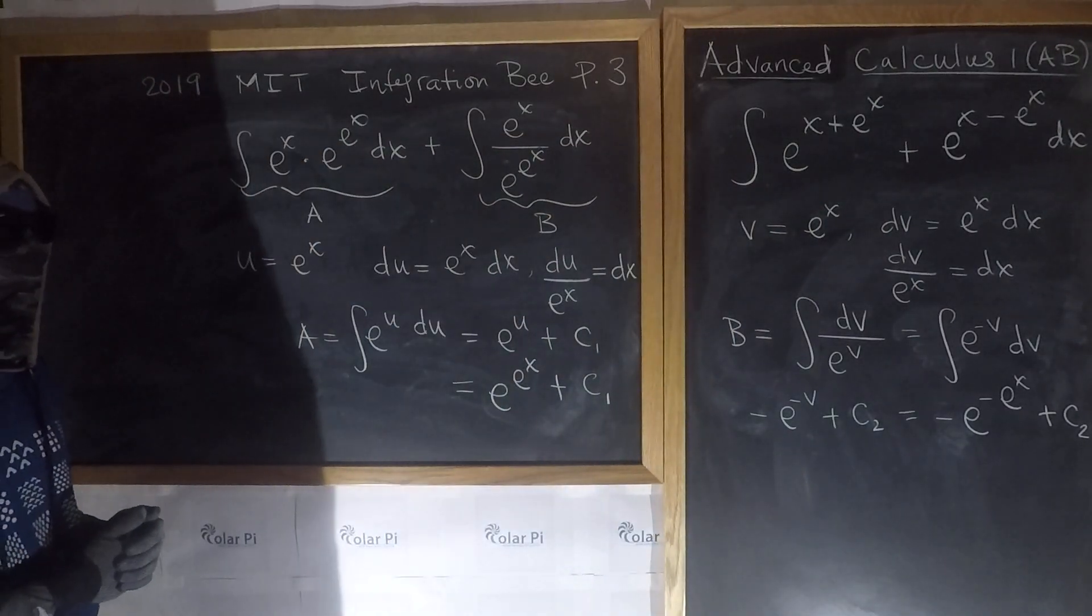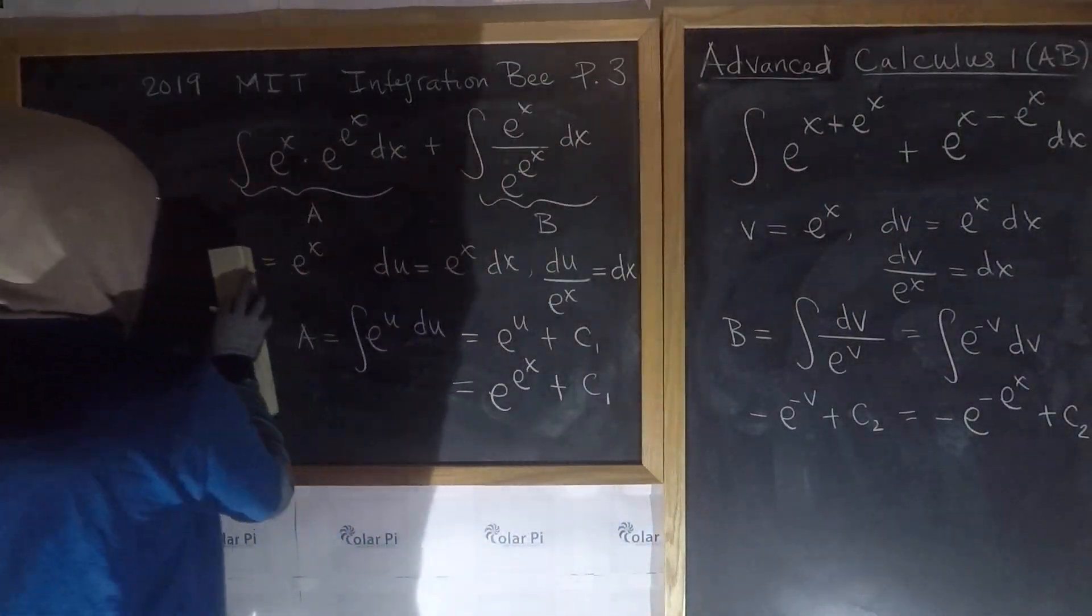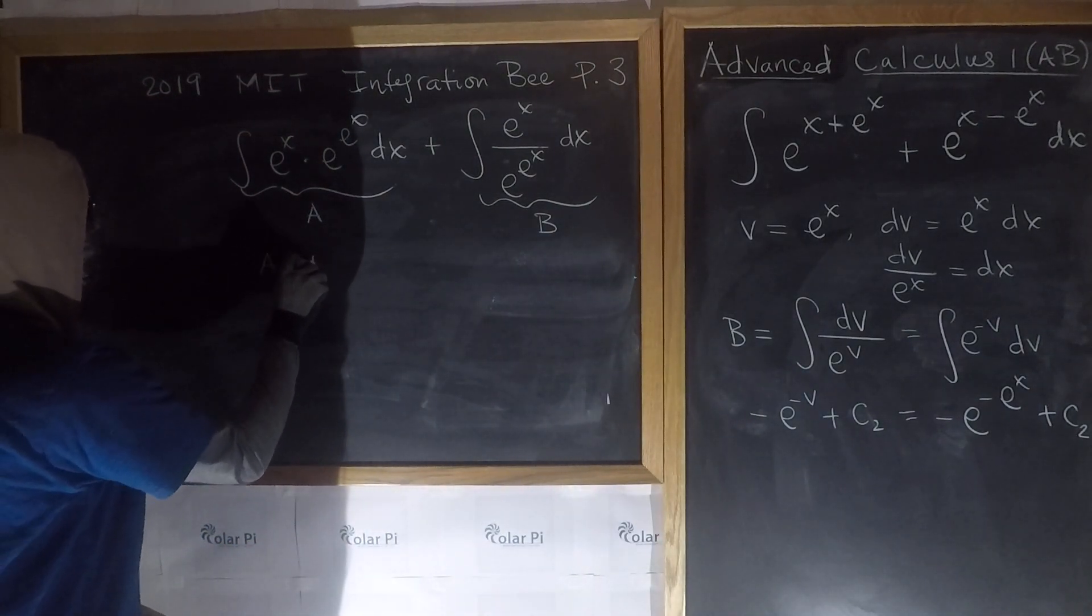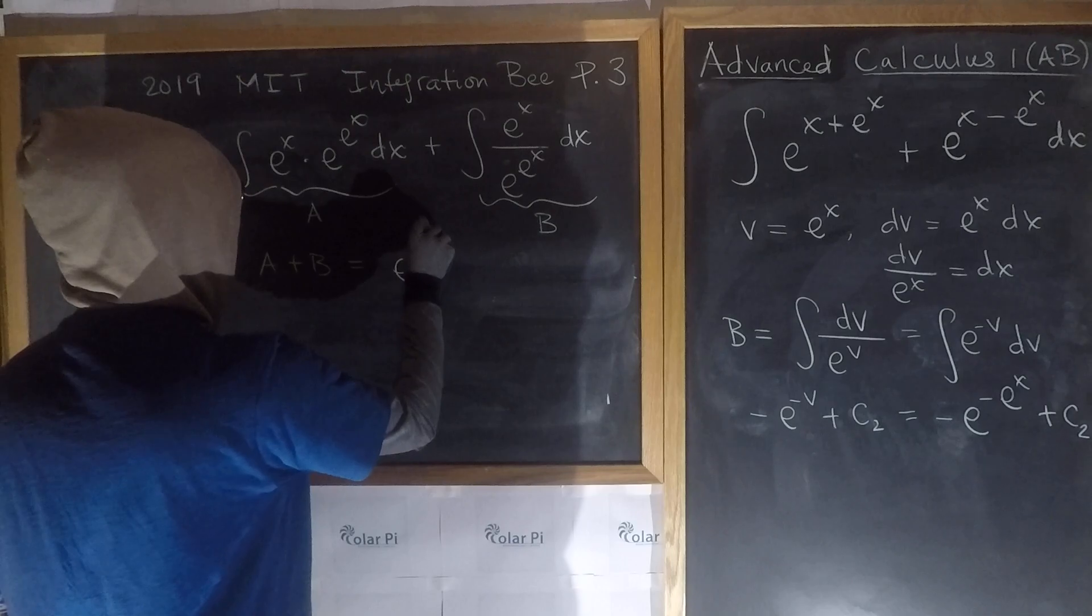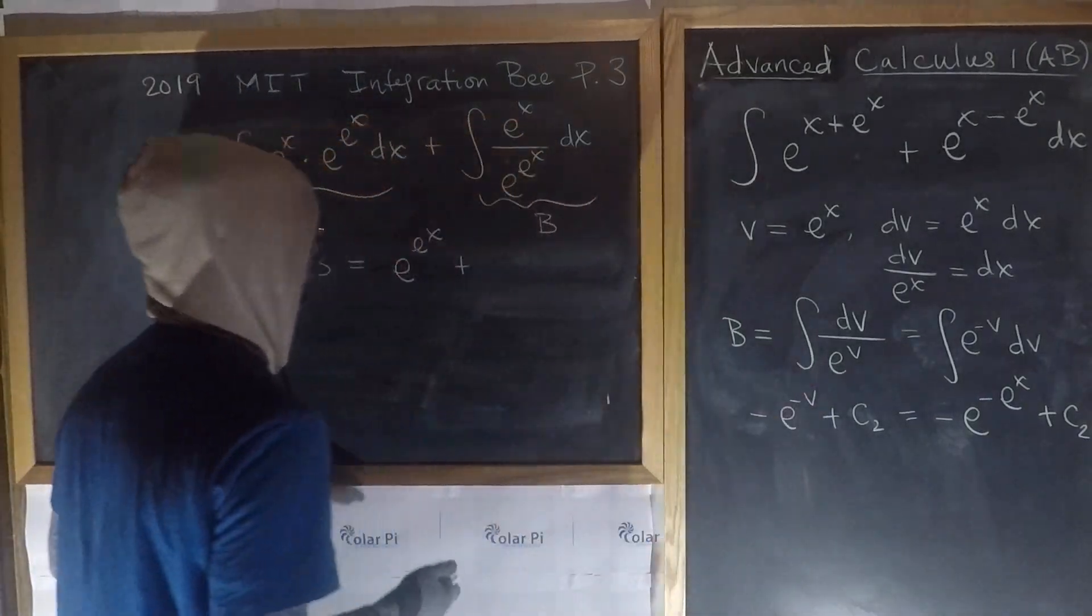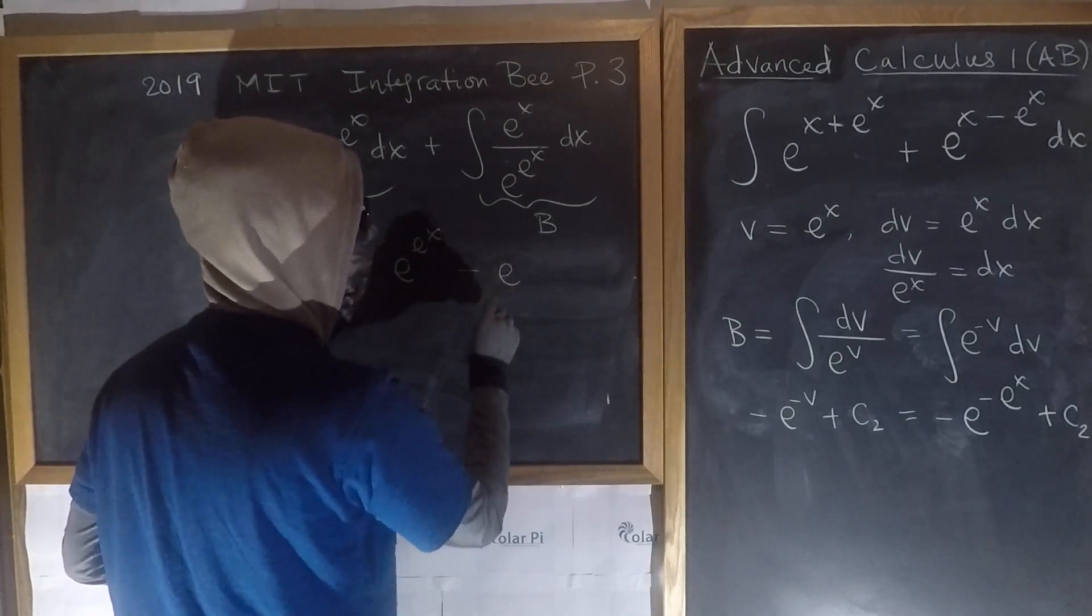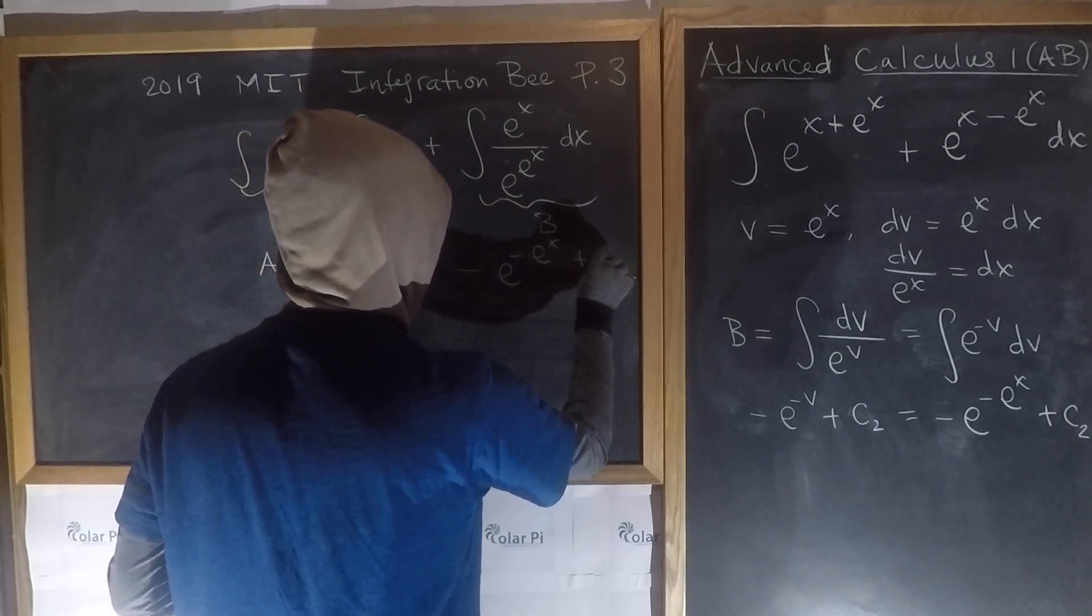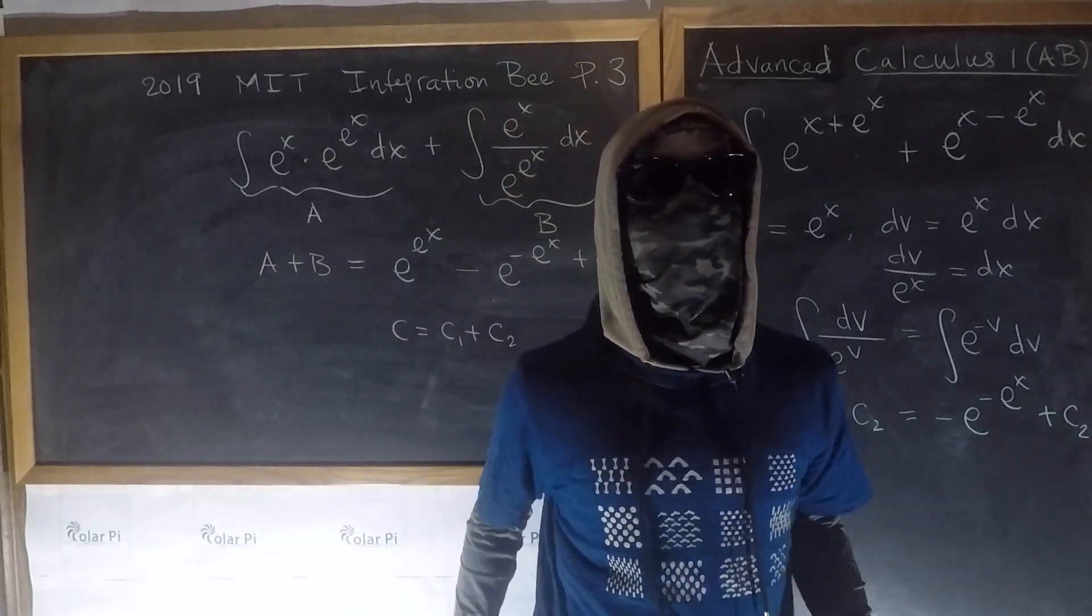So, since we have to add the two results, if we combine c1 and c2 into some constant c, our final answer is going to be, a plus b is equal to, it's equal to what was a? A was e to the e to the x plus c1. So, as I said, we're going to combine c1 and c2. So, plus, and then this, but wait, this leads to the minus. So, actually, minus e to the negative e to the x plus c, where again, c is equal to c1 plus c2. Yeah? This is it for problem three.